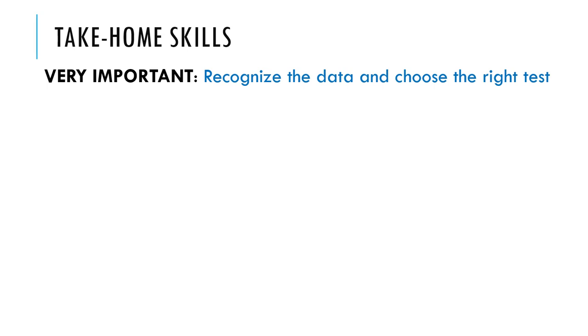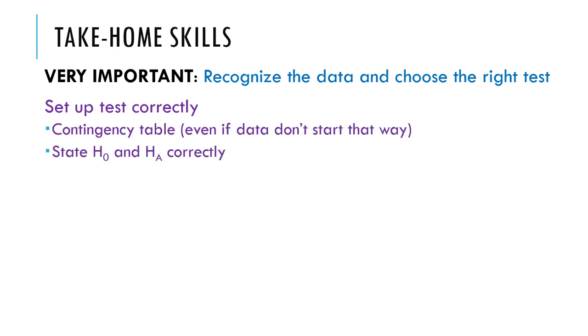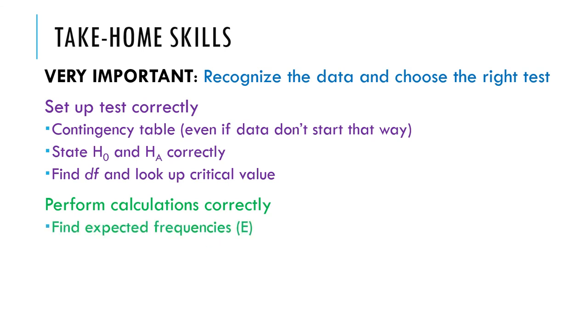Let's talk about what kind of skills you should be able to take home to pass exams and be an amazing data person in real life. Very important: you need to be able to recognize the data and recognize the question setup and do the right test when the time comes. Once you do that, you need to be able to set it up correctly. Get the data in the proper format. Make sure it's all frequencies, not proportions. Get it into that two-way contingency table correctly. You need to state your null alternative hypotheses correctly and find the degrees of freedom and look up the critical value correctly.